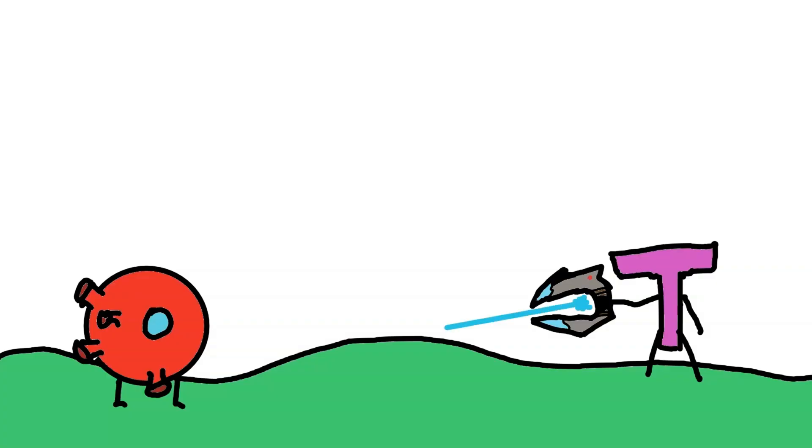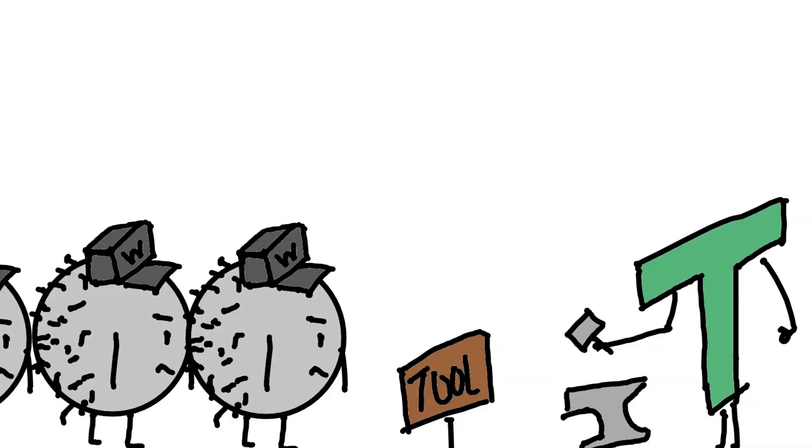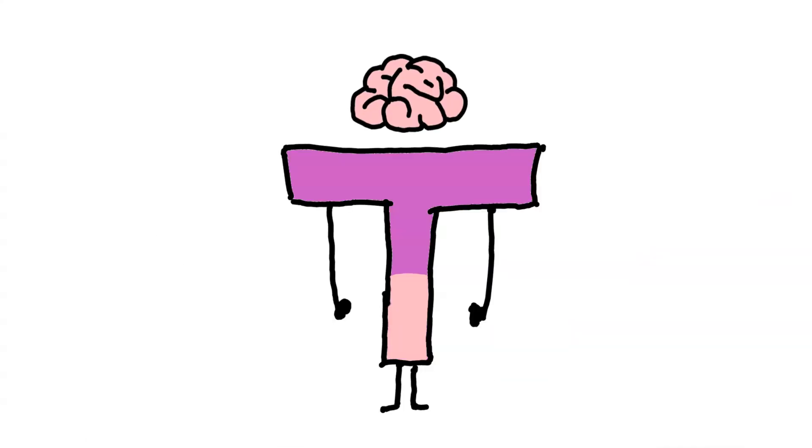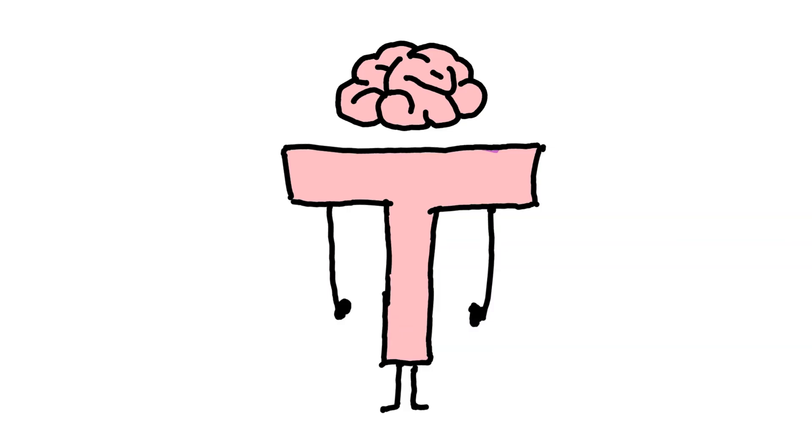Some of them turn into killer T cells. They find and destroy infected cells. Others turn into helper T cells. They help other immune cells like B cells do their job better. After the infection is gone, some of those T cells stay behind as memory T cells, so that if the virus comes back, these memory cells respond faster and stronger.